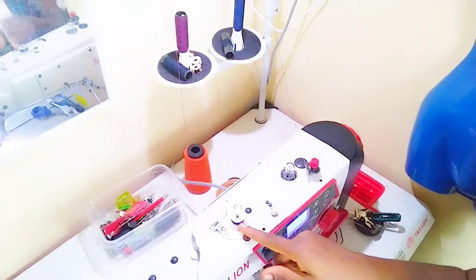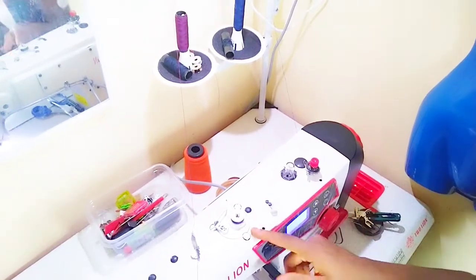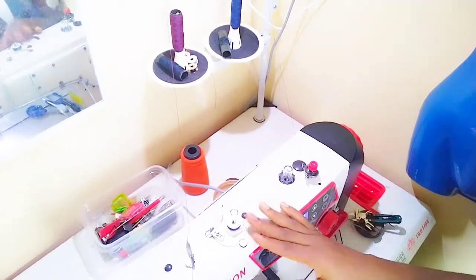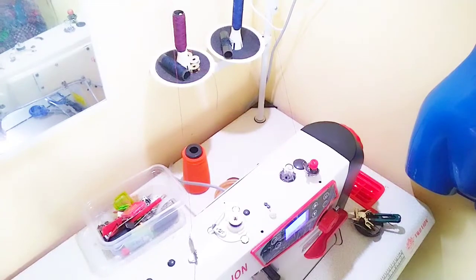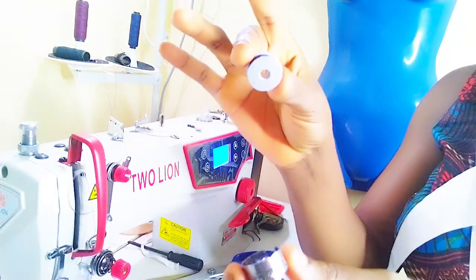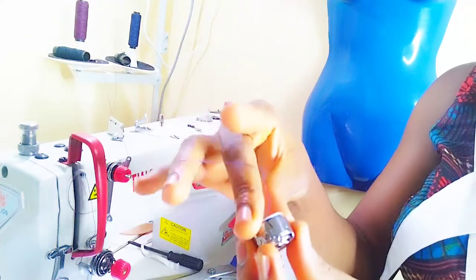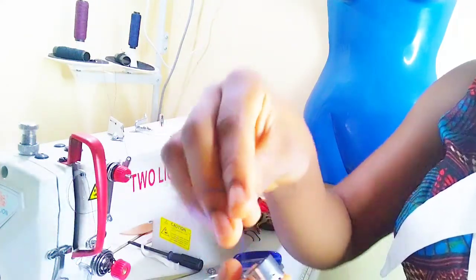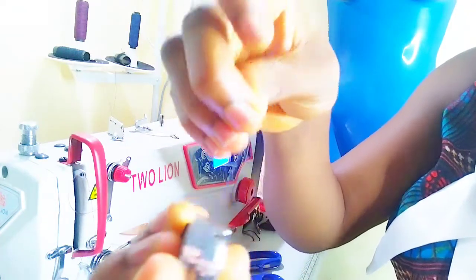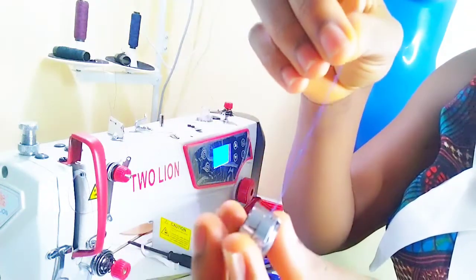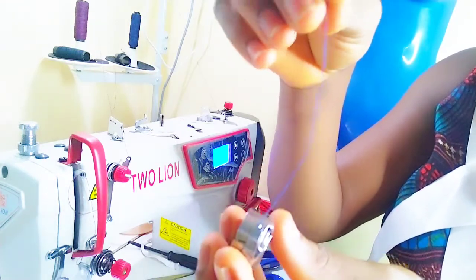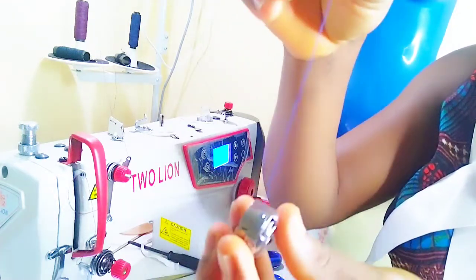So now to work with the bobbin case, you want to fix this into the bobbin. All right, now guys, so you pick this thread this way and you start it this way. Then you take the thread and you hang it in here, and then it comes to this point and it comes out here. So when it comes out here, to test if it is too loose or too tight, just do this way.